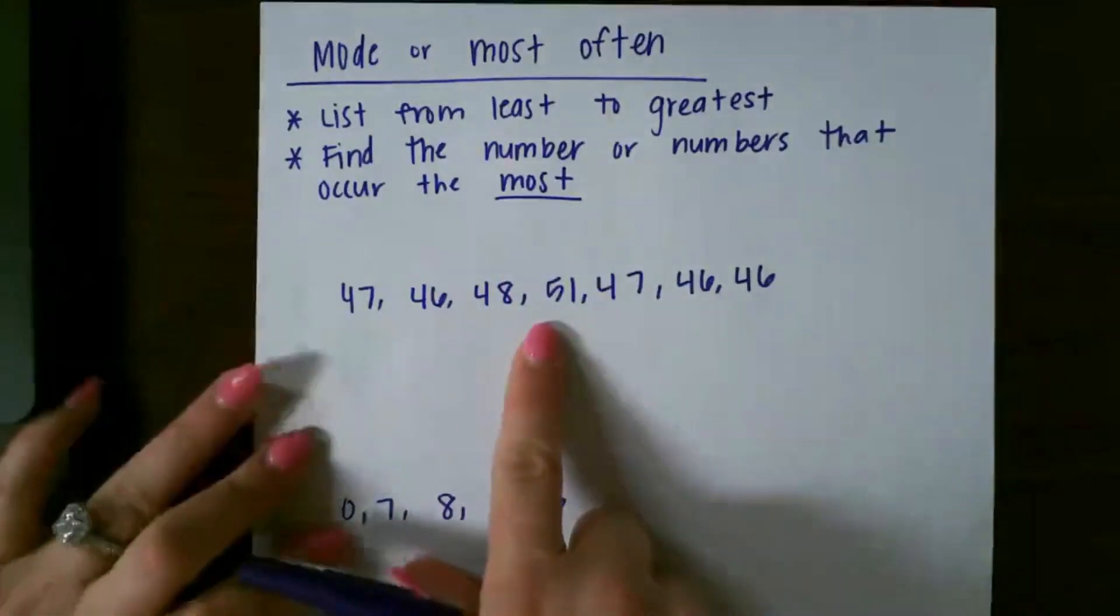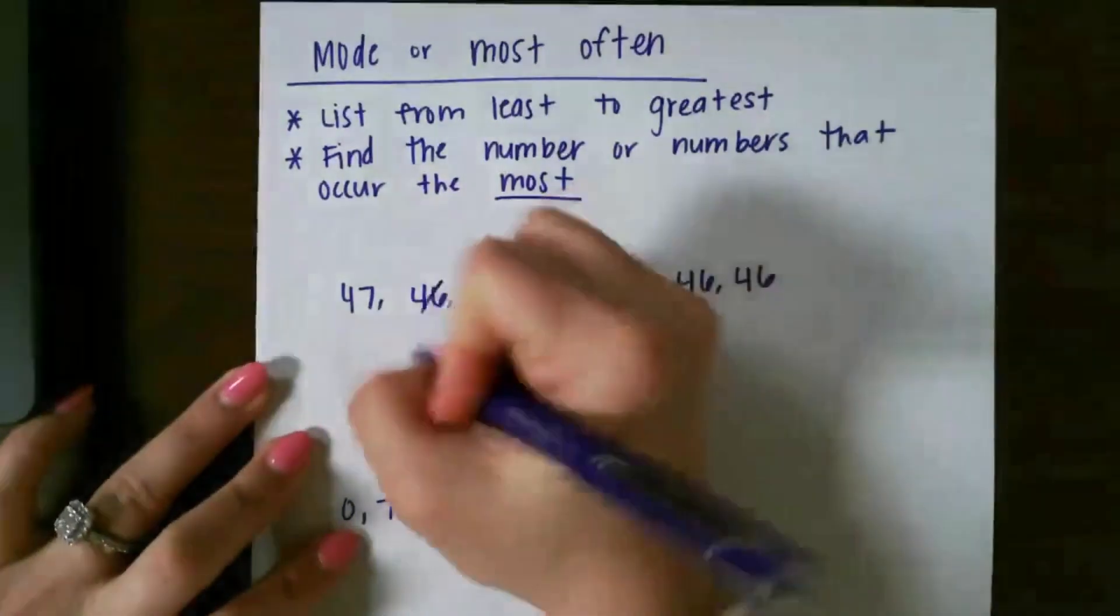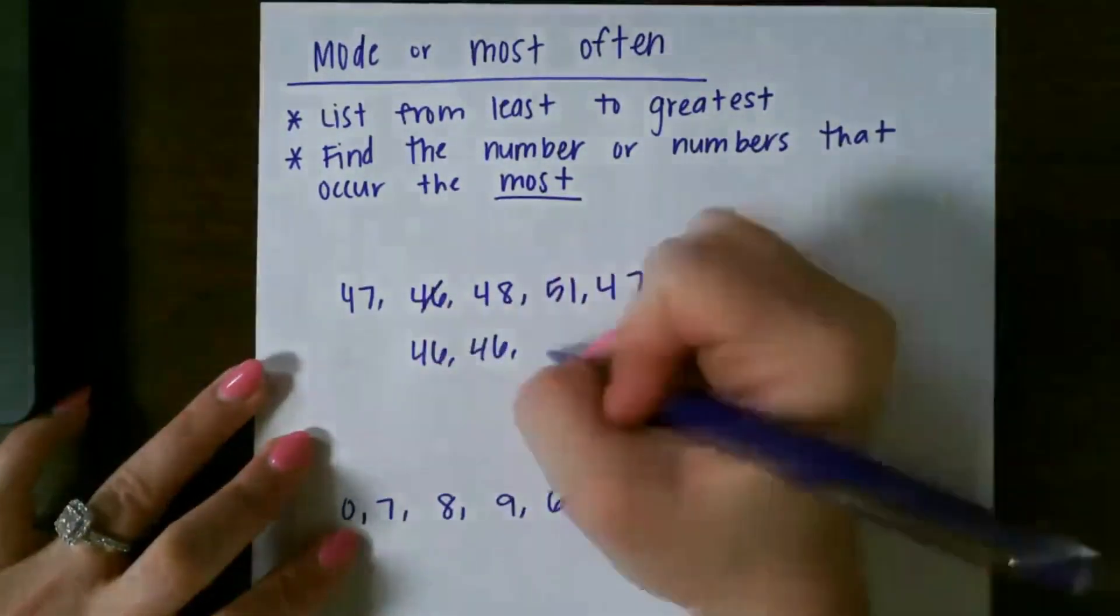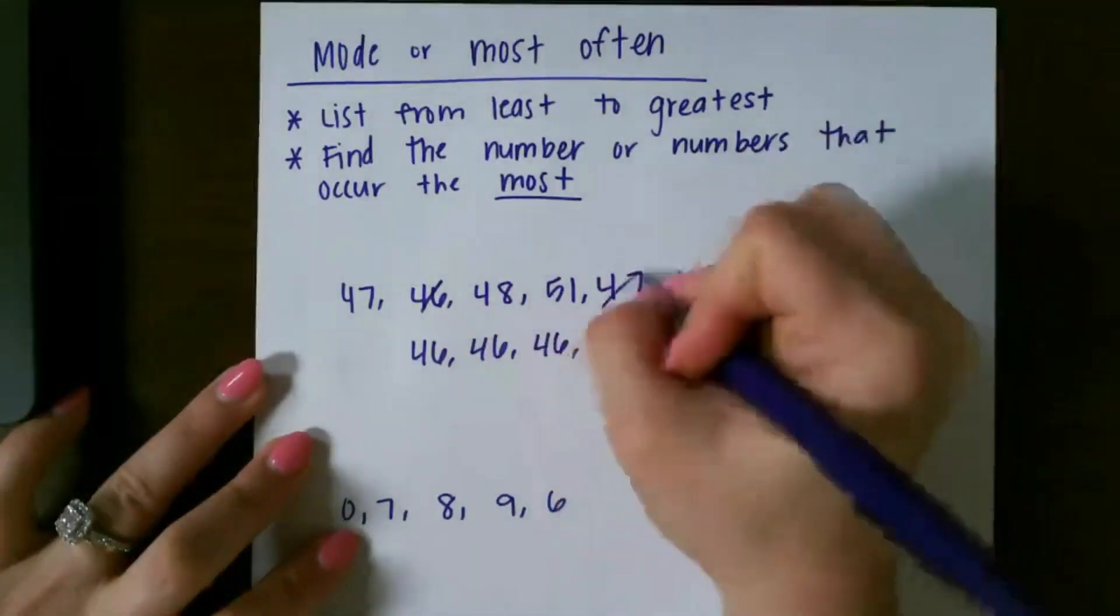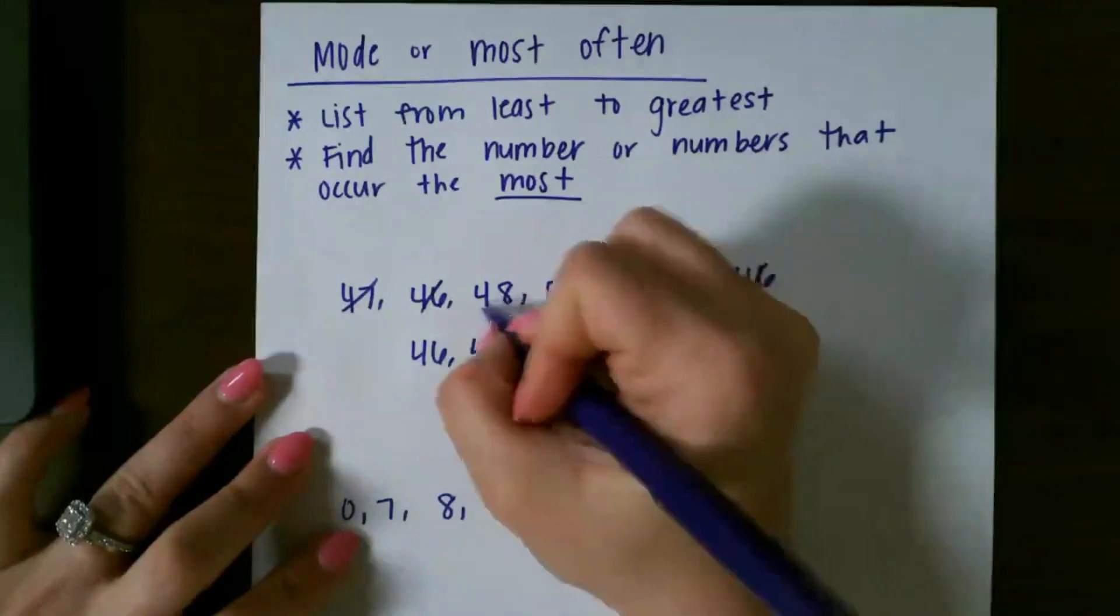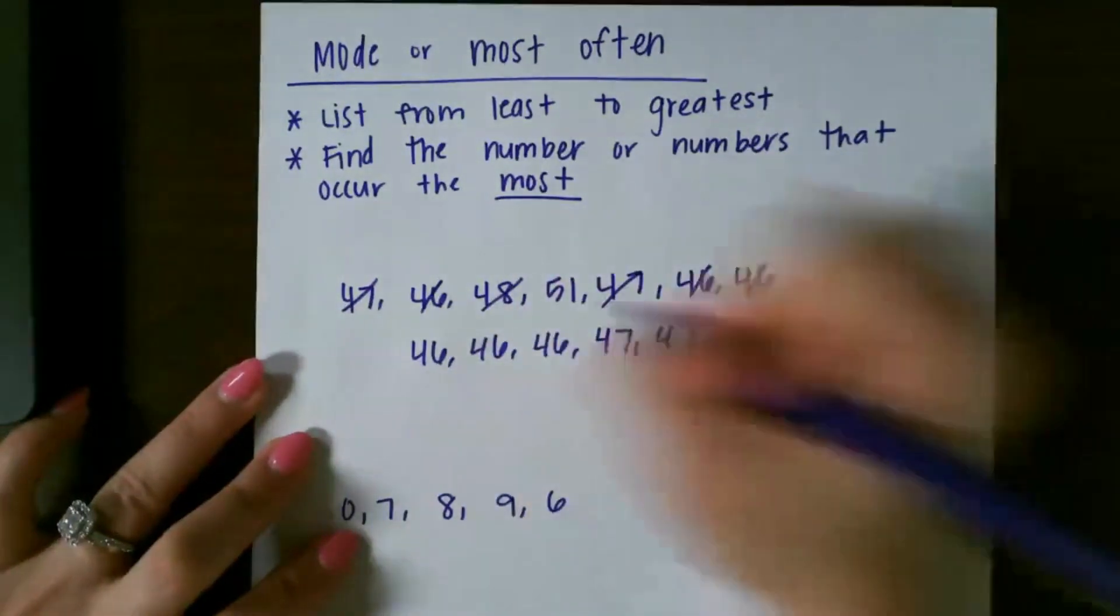So looking at our first list, I'm going to list them in order from least to greatest first. And again, this step is not necessary to find the mode, but sometimes it helps you visualize them a little bit better, especially when you have several numbers.